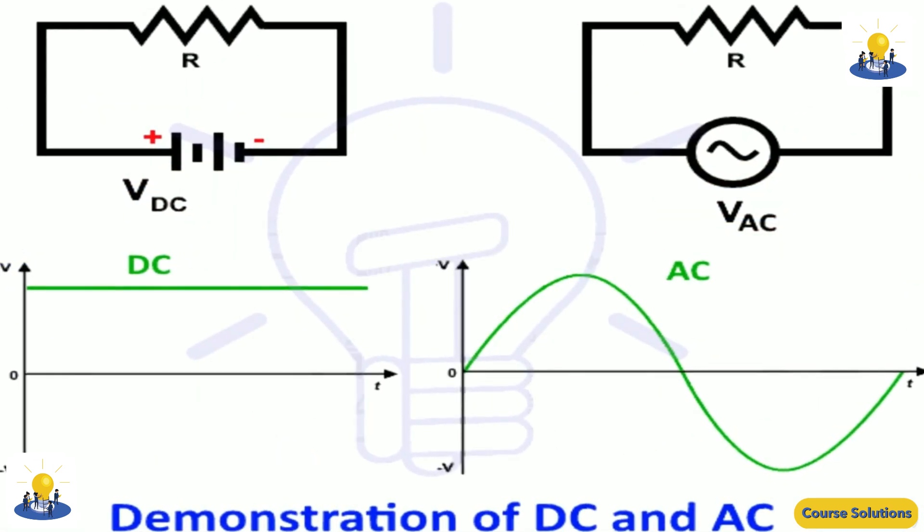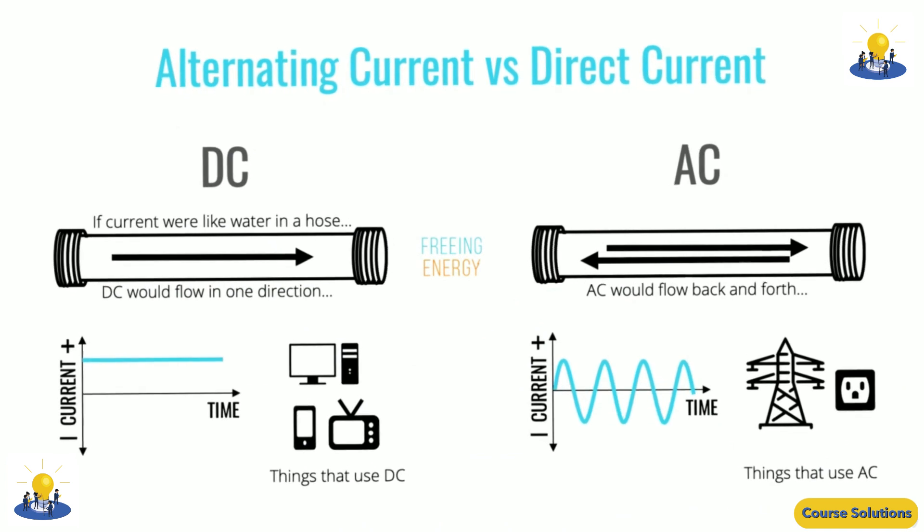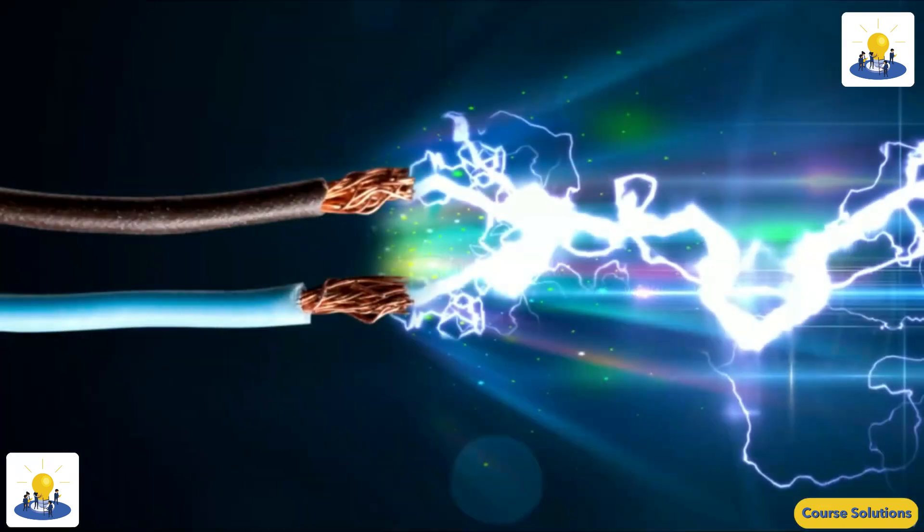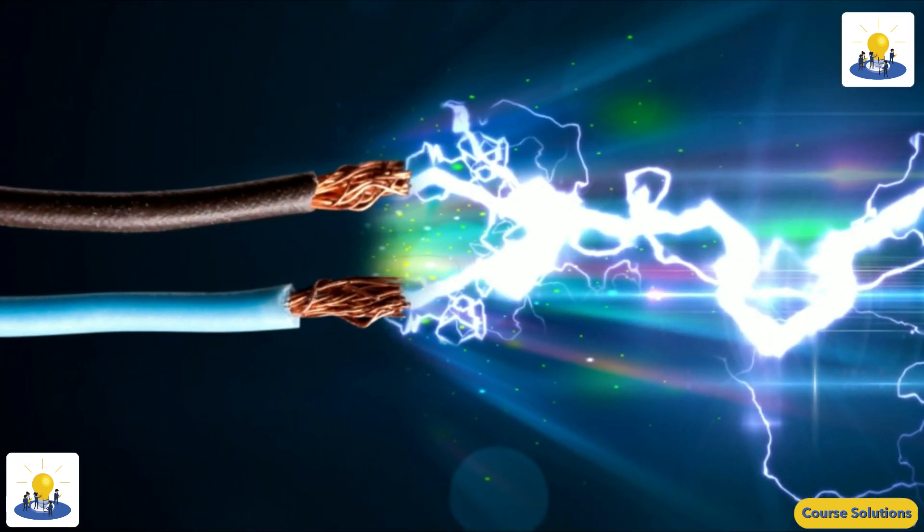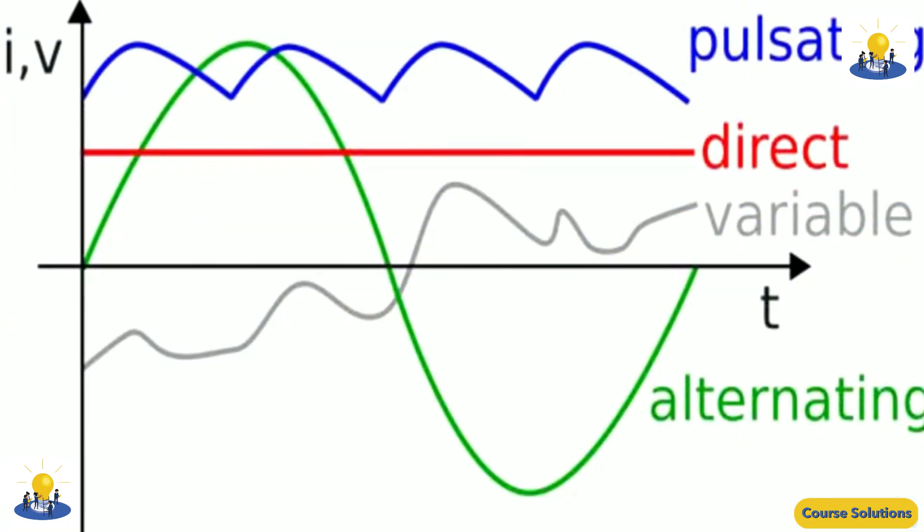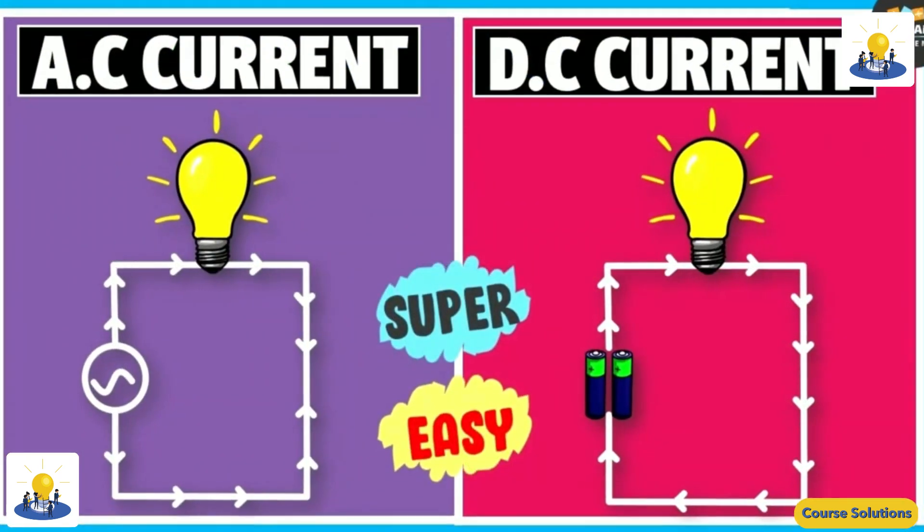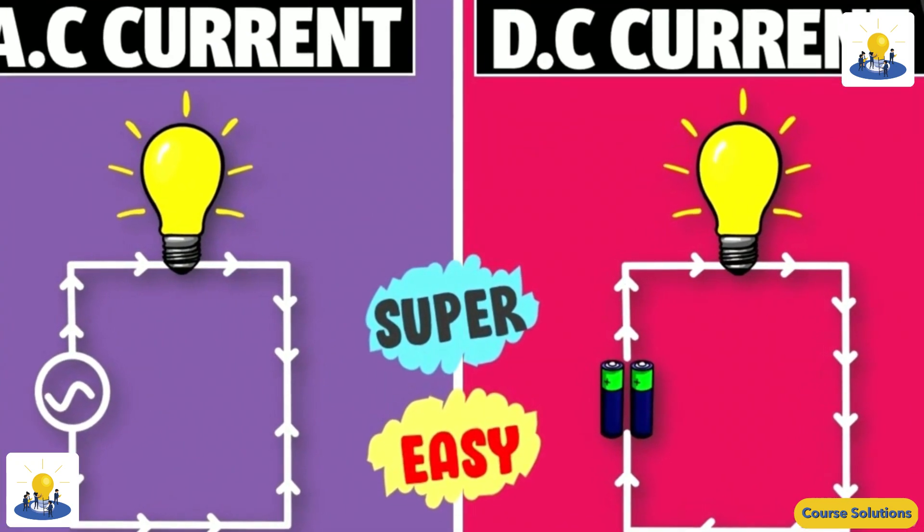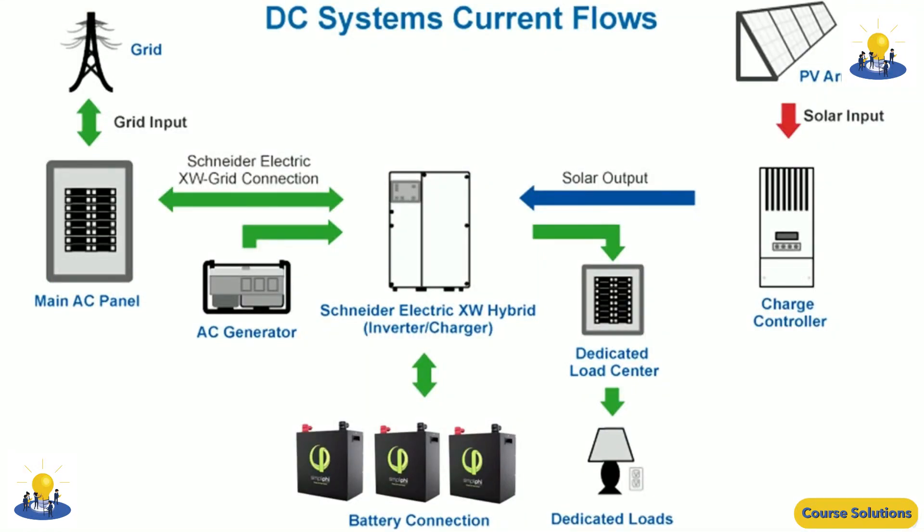Direct current has many uses, from the charging of batteries to large power supplies for electronic systems, motors, and more. Very large quantities of electrical energy provided via direct current are used in smelting of aluminum and other electrochemical processes.